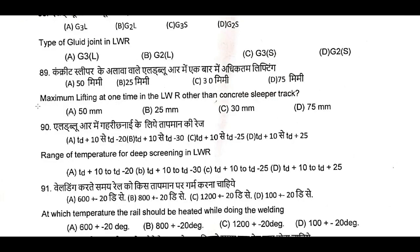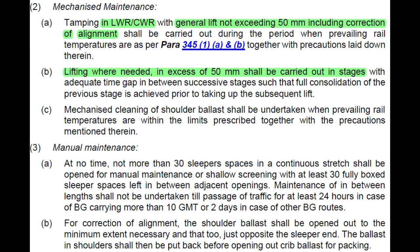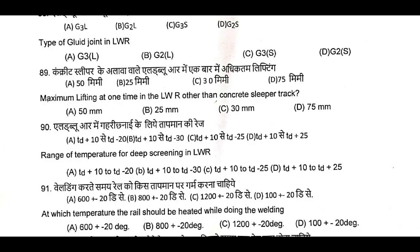Question Number 89: Maximum lifting at one time of LWR, other than concrete sleeper track. In LWR/CWR territory, general lift shall not exceed 50 mm. If needed more than 50 mm, it shall be carried out in stages. Question Number 89, A is the correct answer: 50 mm.